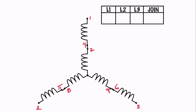Line one connects to lead one, line two connects to lead two, line three connects to lead three. Then for our joining points: we connect four and seven together, five and eight together, and six and nine together. And we're done — we've got it all connected up for the higher voltage.